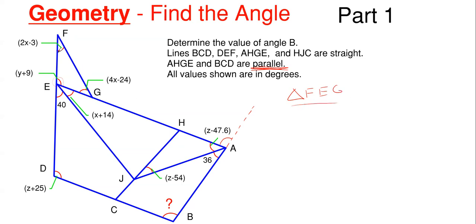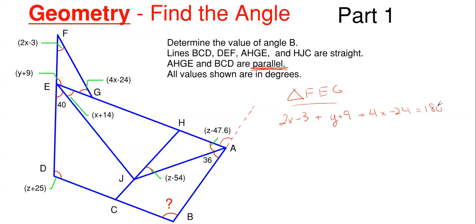We know that the total of the angles inside a triangle must equal 180 degrees. So we have: (2x − 3) for the top angle at F, plus (y + 9) at E, plus (4x − 24) must equal 180 degrees.